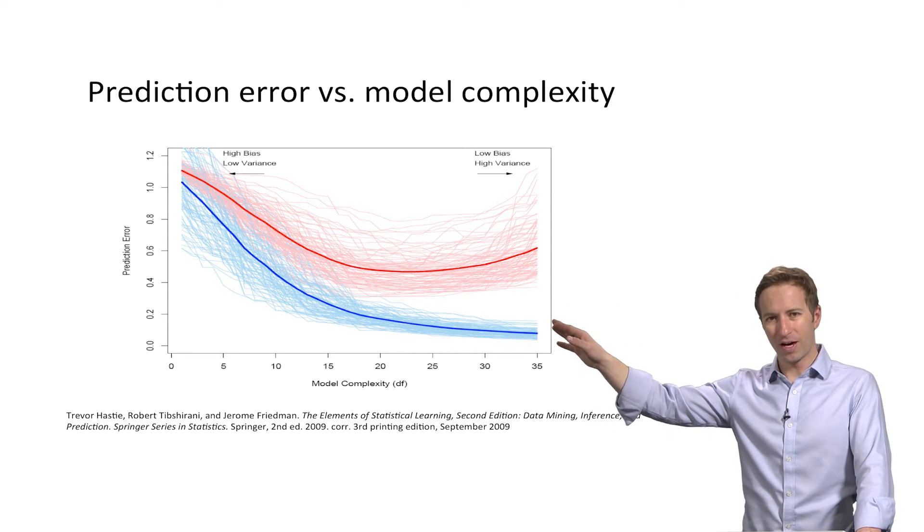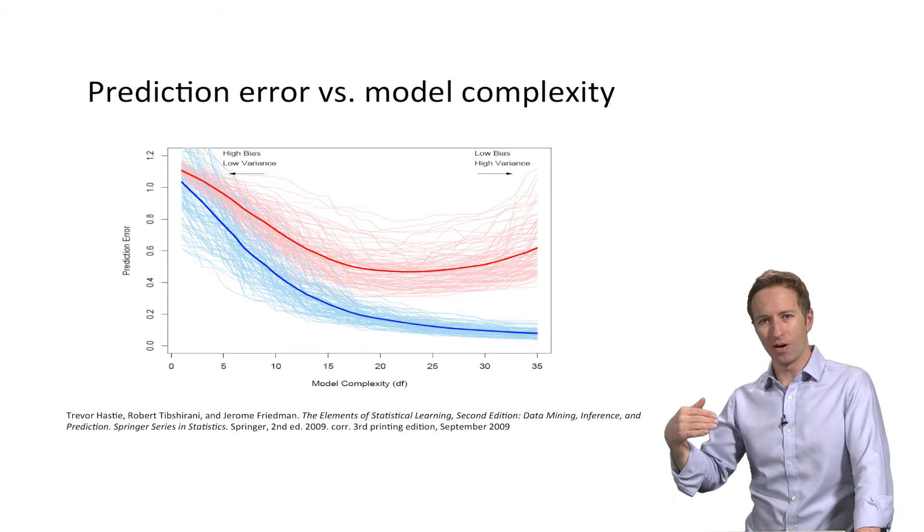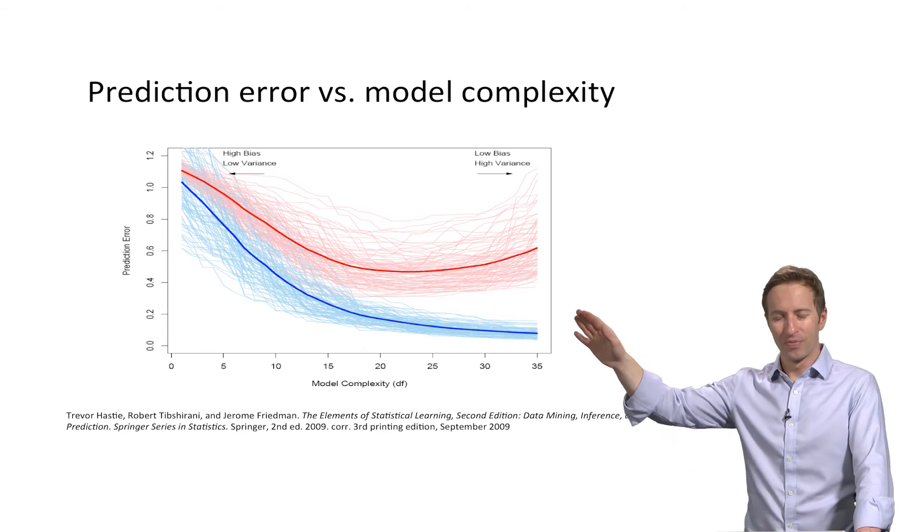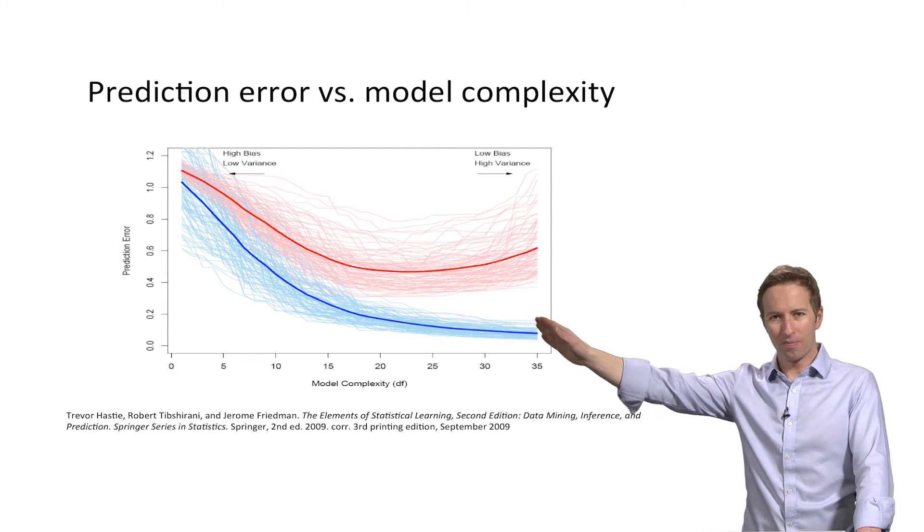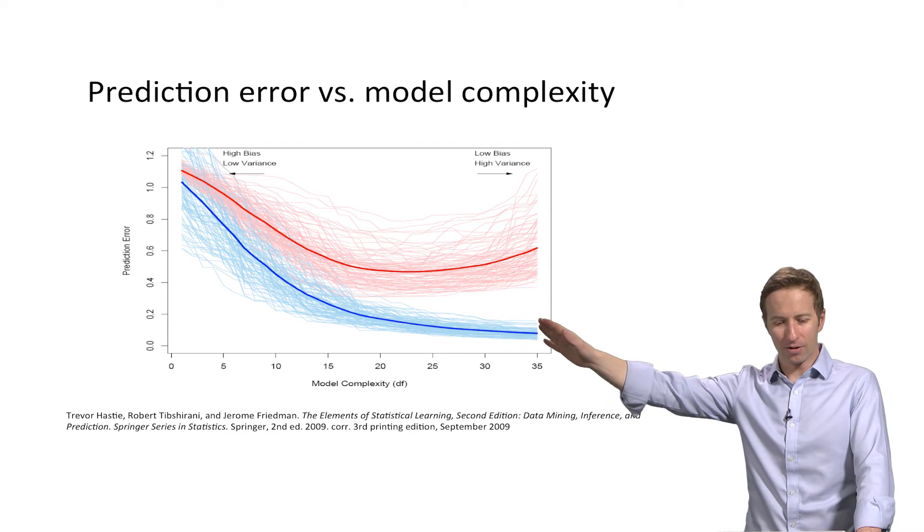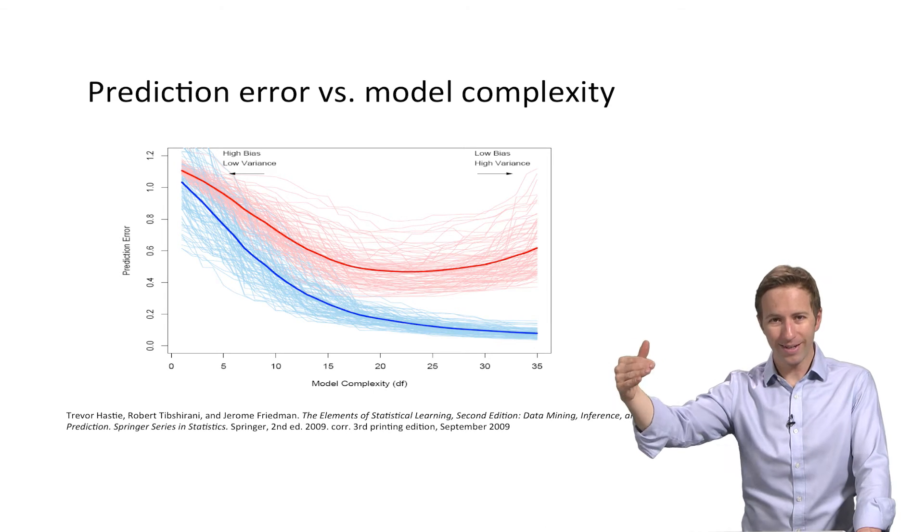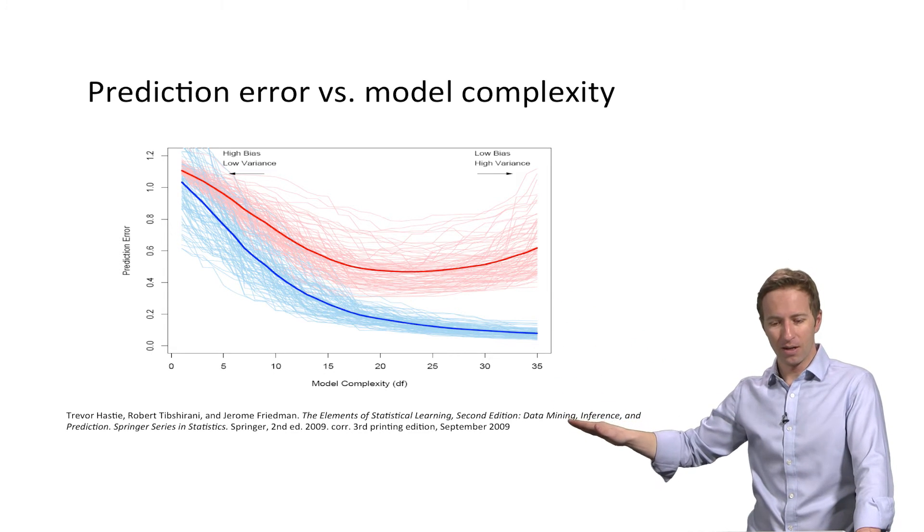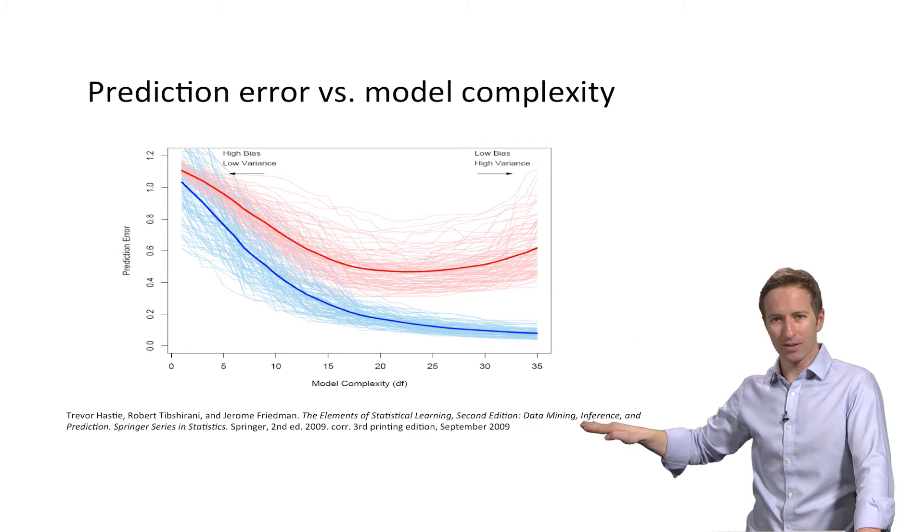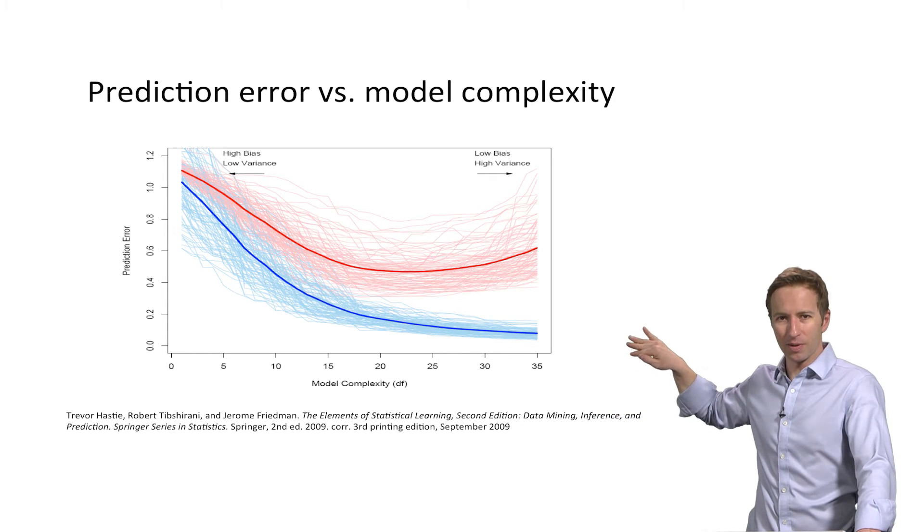So if you look at the red line, that's the one we care about, that's how well the model performs on future data it hasn't seen yet. So as you make the model more and more complex, the error on the holdout test data gets better and better and better. And then as it starts to get too complex, the holdout error gets worse because it's overfitting.